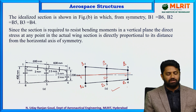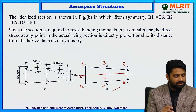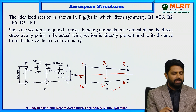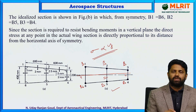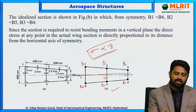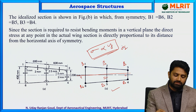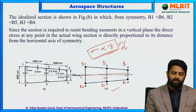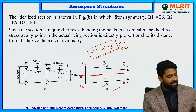Since the section is required to resist bending moments in a vertical plane, the direct stress at any point in the actual wing section is directly proportional to its distance from the horizontal axis of symmetry. So rather than looking for stresses sigma1 or sigma2 directly, we look for the distances from the centroid to the respective booms.